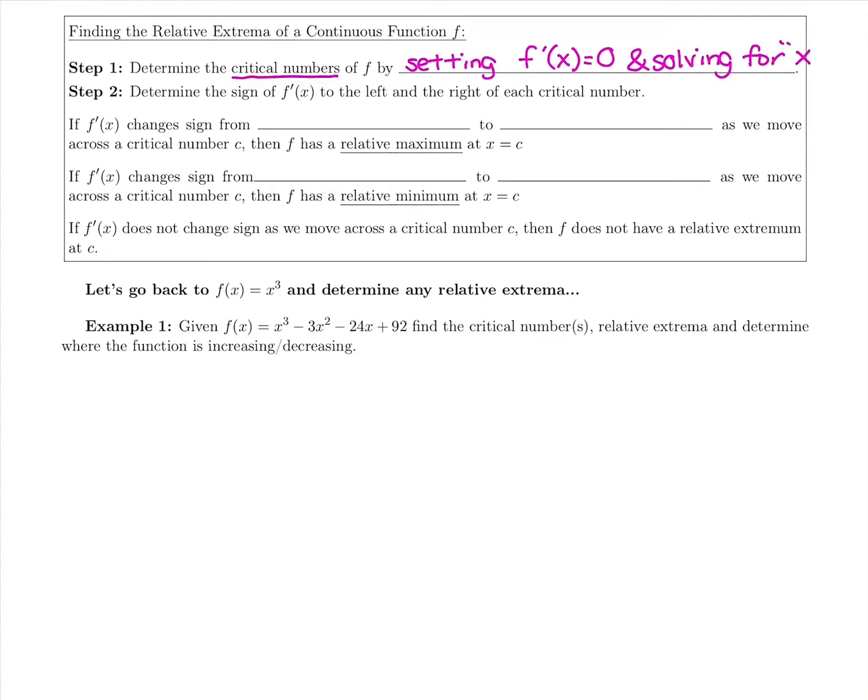That was our first step when we looked at example one a couple pages ago. We took the derivative of x cubed, we set it equal to 0, and what makes a derivative 0 or undefined is a critical number.